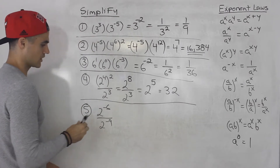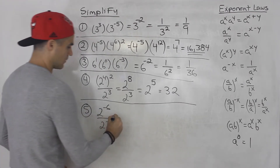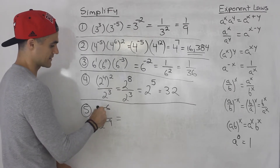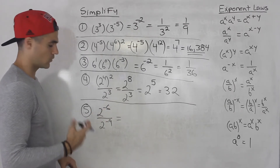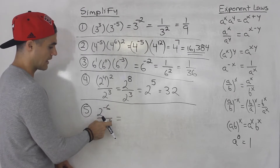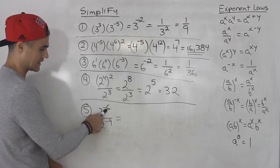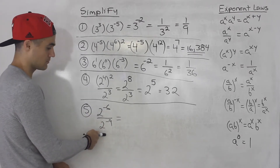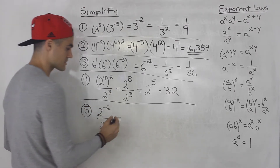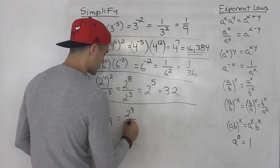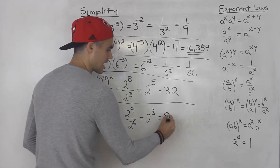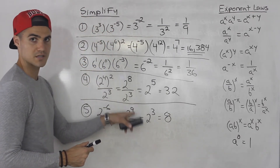Moving on to number five: we got two to the negative six over two to the negative nine. These are the same base so we could subtract the exponents — negative six minus negative nine — however, what I like to do whenever I'm dealing with a fraction and I see negative exponents is bring them over and change them to positive. So two to the negative six comes down and changes to two to the positive six, and two to the negative nine comes up and changes to two to the positive nine. This gives us two to the nine over two to the six, which is two to the power of three — nine minus six — which equals eight.